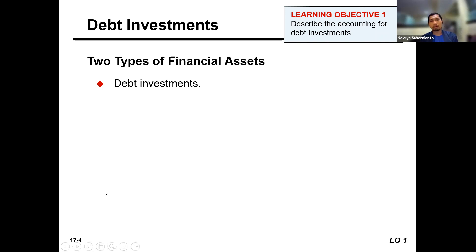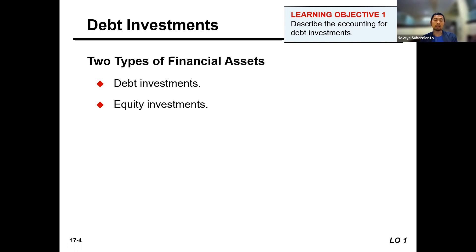When we talk about investment, we talk about two instruments: debt instrument and equity instrument. A company can buy debt or shares from the market as investment. So if the company has idle cash and they want to make money from it, they can purchase investment by purchasing debt securities or equity securities, which is common share from the capital market.